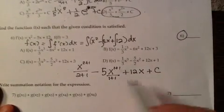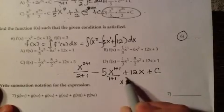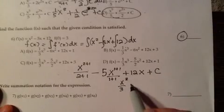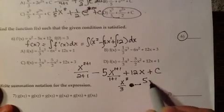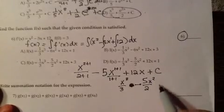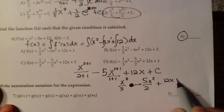So in the end, we have x to the third over 3 minus 5x to the 2 over 2 plus 12x plus c. That is our function.